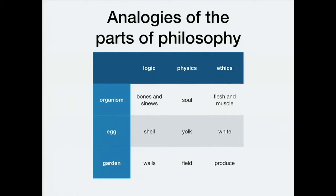They also have a more bizarre image of an egg — a proto-organismic analogy — where logic is the shell, physics is the yolk, and ethics is the white part surrounding the yolk. One would have to get into their views about embryology to unpack that analogy. And then a more homely comparison to a garden: logic is the walls around the garden, physics is the fields or flower beds, and ethics is the fruit or produce. The only point is stressing the tight unity and interdependence of all parts of philosophy, while still being distinguishable.